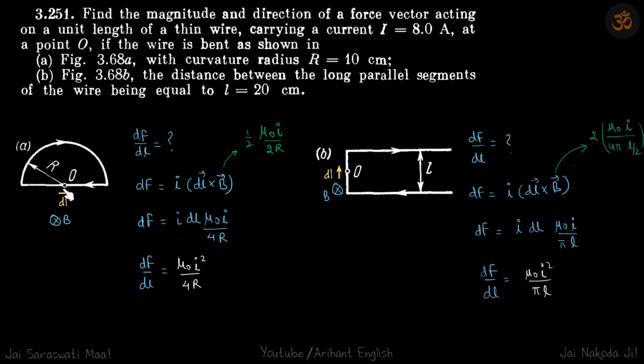So df by dl - let's take a small element dl here. The magnetic field because of this curved part will be B inside the plane. So the small force df on this element dl is i into dl cross B, where B is half μ₀i by 2r because of the semicircle, half of that of the whole circle.